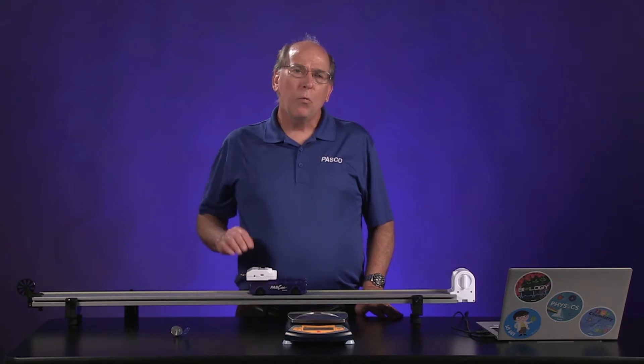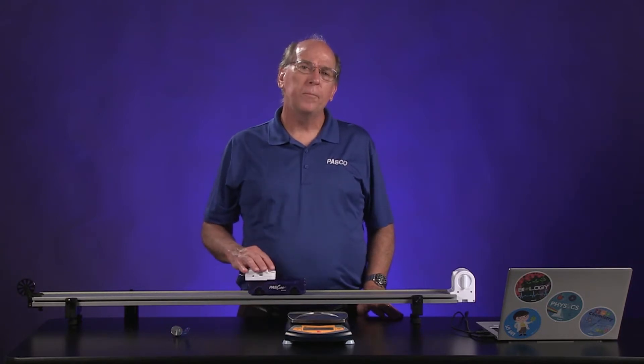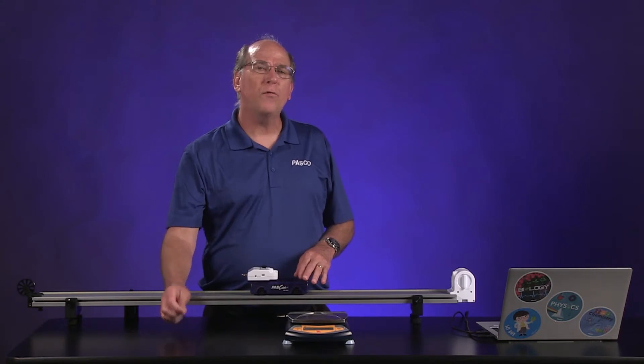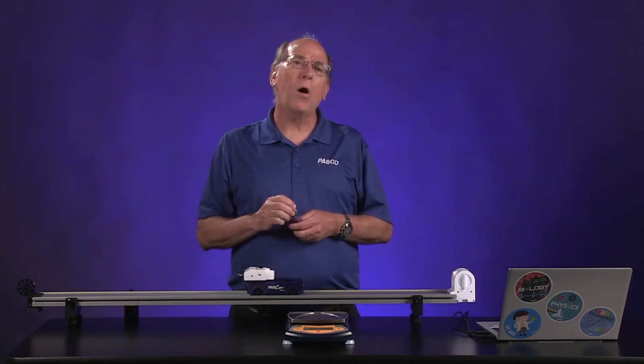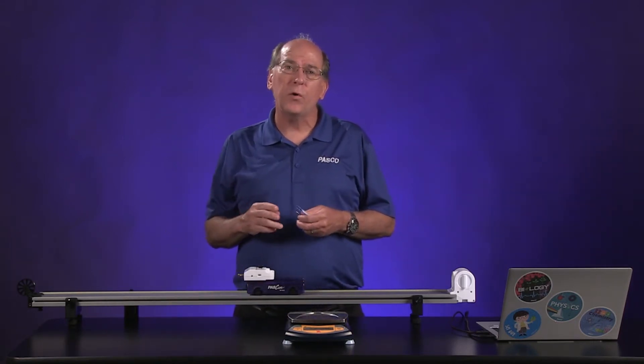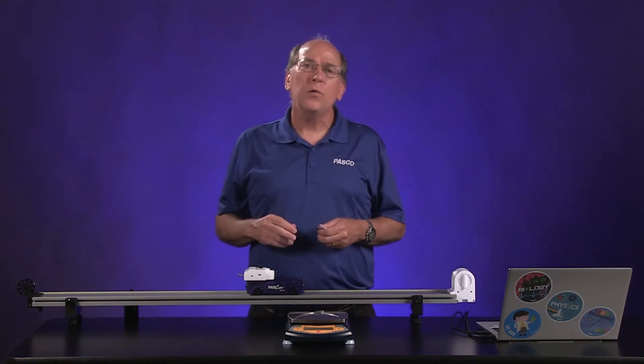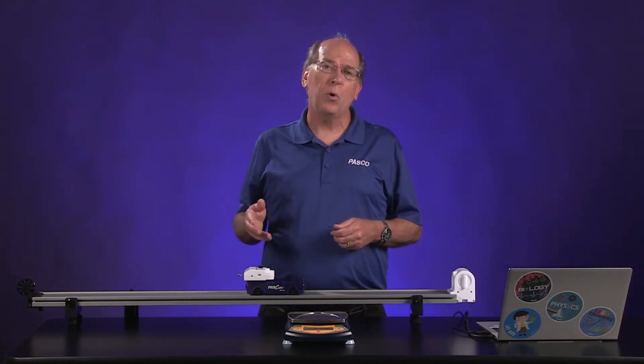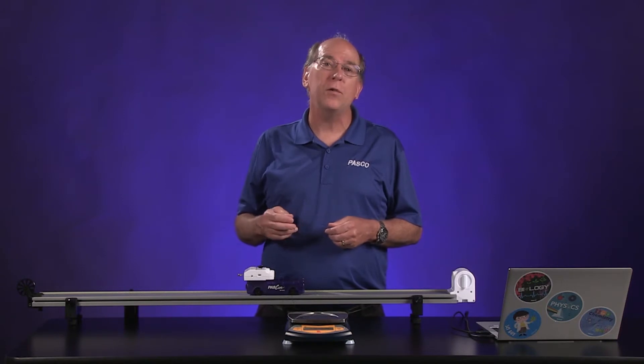In this lab, we have a cart instead of a car. It will be pulled by a string attached to a falling weight, unlike a car that is pushed by the friction force from the road. This ensures that the force is constant and measurable, making our analysis easier.